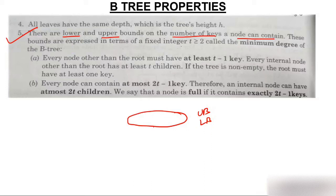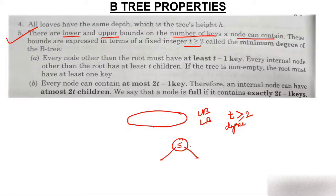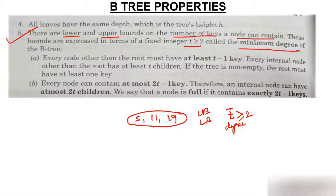These bounds are expressed in terms of a fixed integer t, called the minimum degree. The degree t is greater than or equal to 2, because if a node has only one element, it will have at least two children. The maximum number of keys a node can have is 2t−1, giving a maximum of 2t children. The minimum number of keys is t−1, giving a minimum of t children.